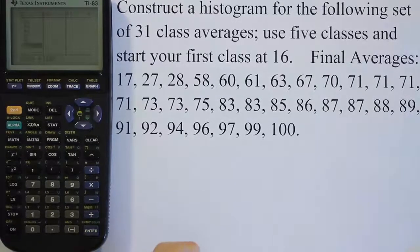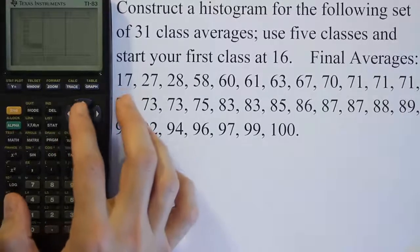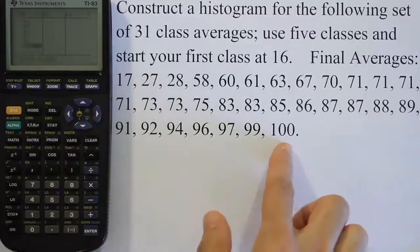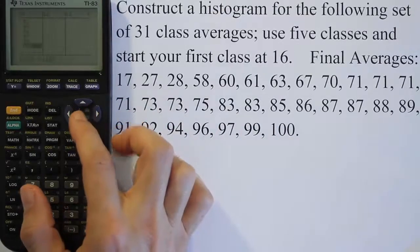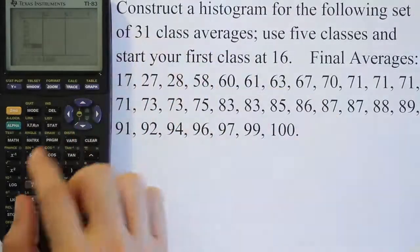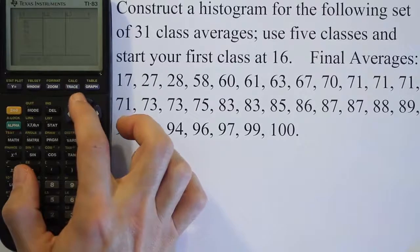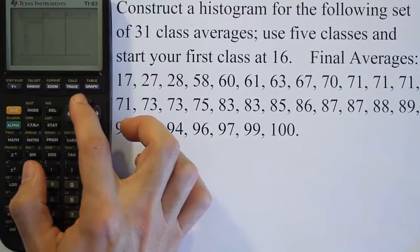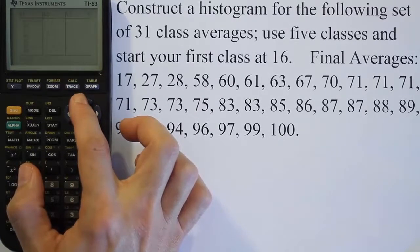Now you can see that I've entered all the numbers into the list. You can see that when I highlight the very last number in my list, 100, it turns up in position 31. And that basically tells me that I have indeed the 31 class averages entered into my calculator. If you scroll back up to the list, you can see that all of them are two digits, so I didn't make a typo anywhere. So it looks like my list is pretty well done.